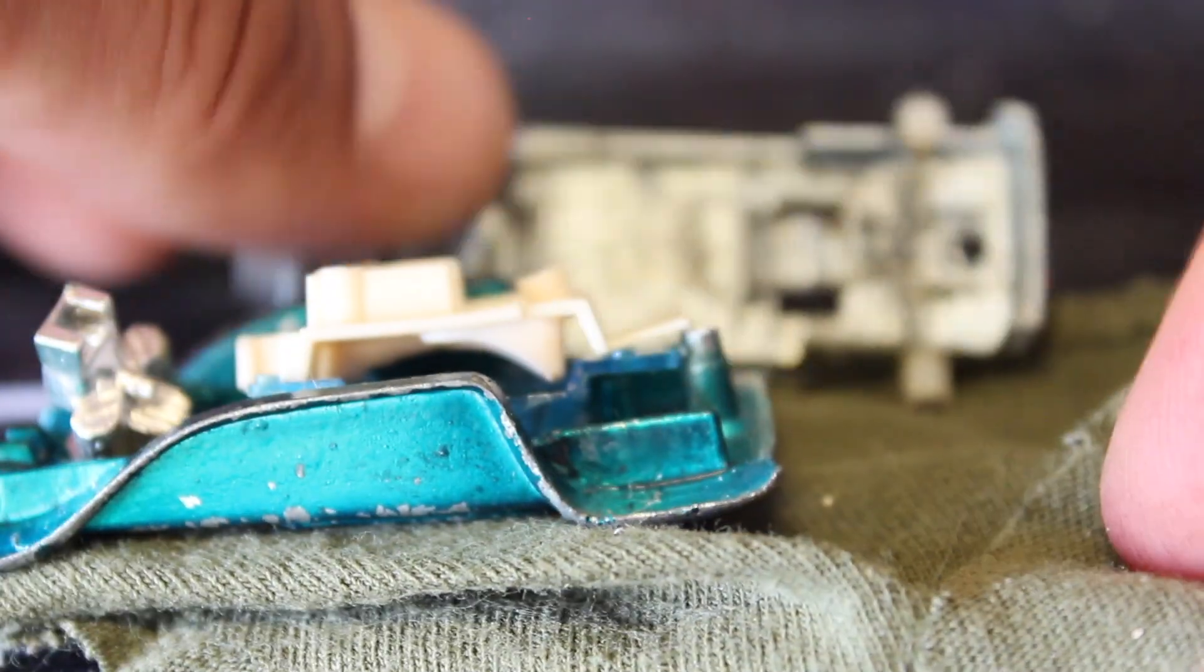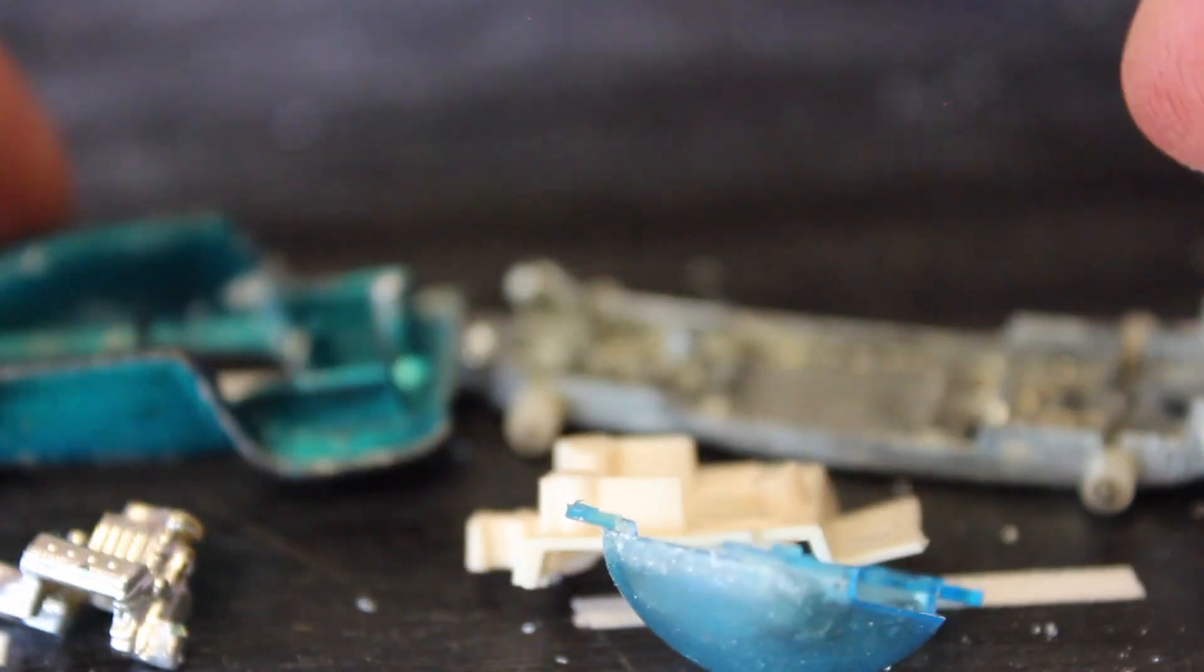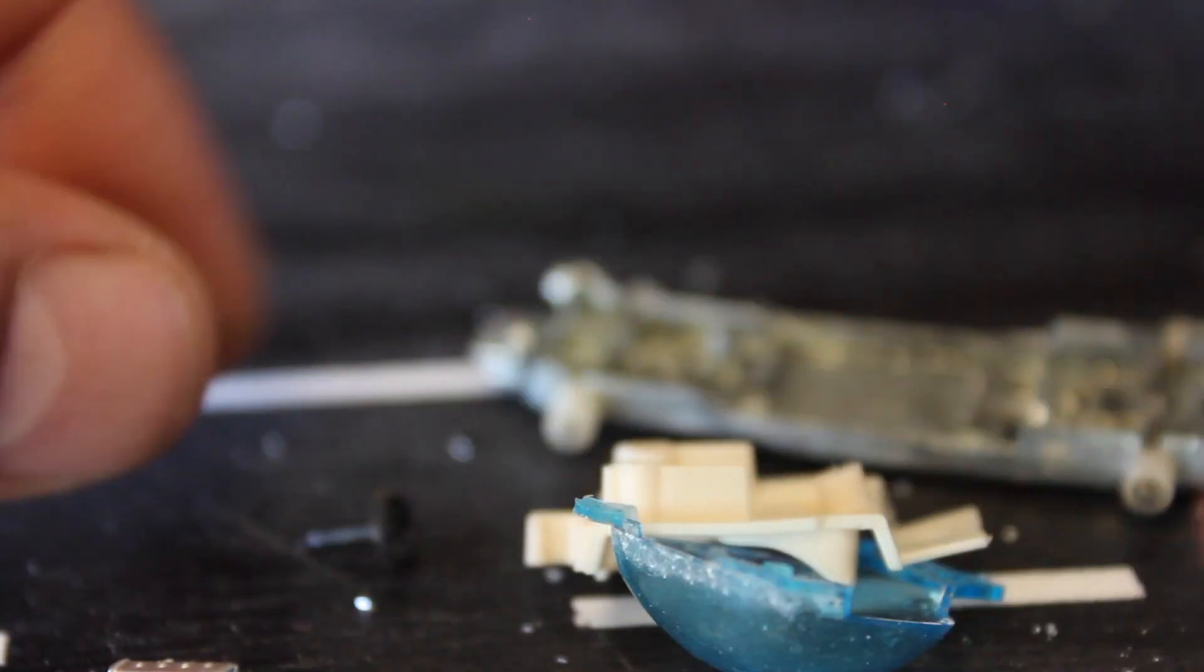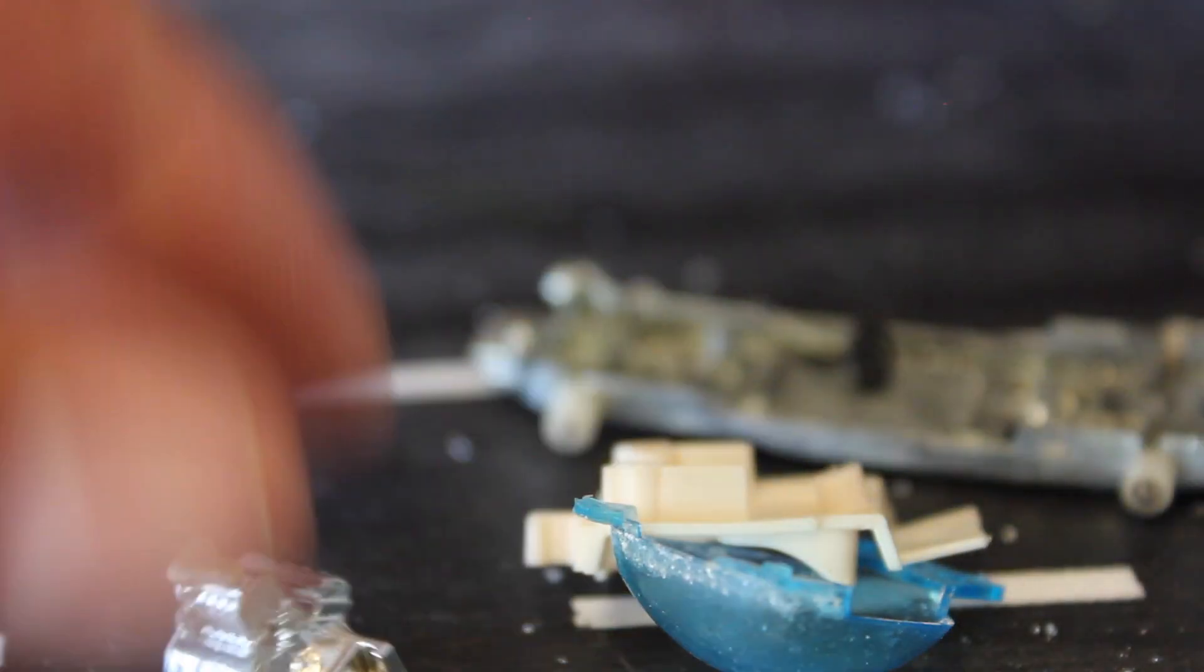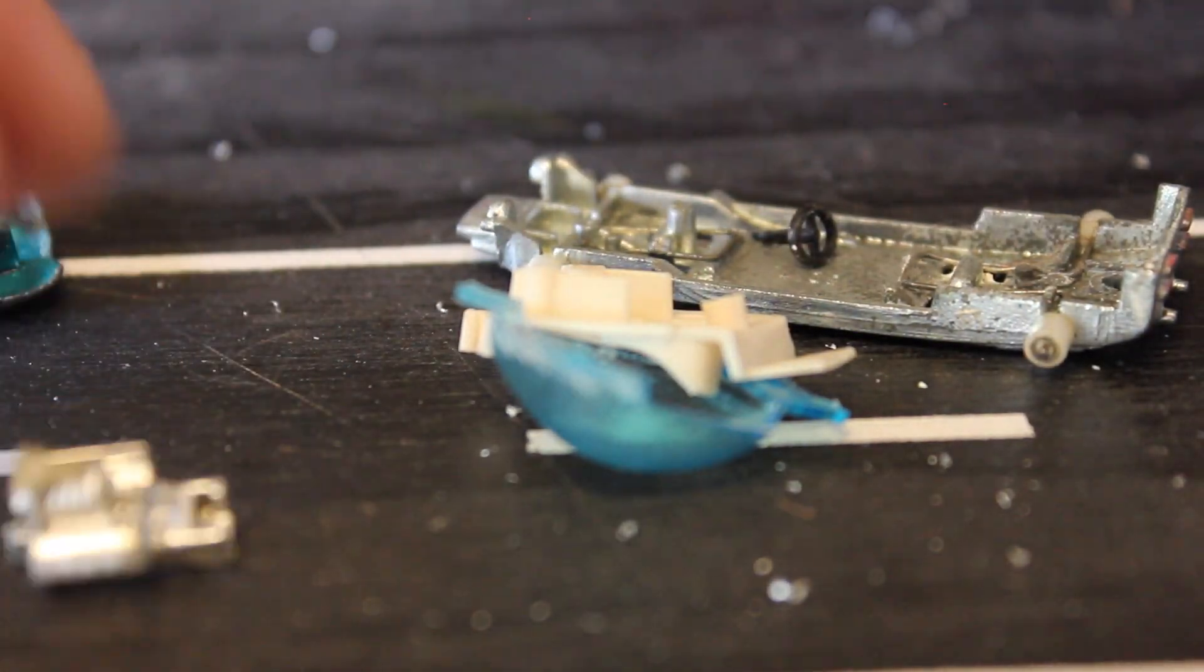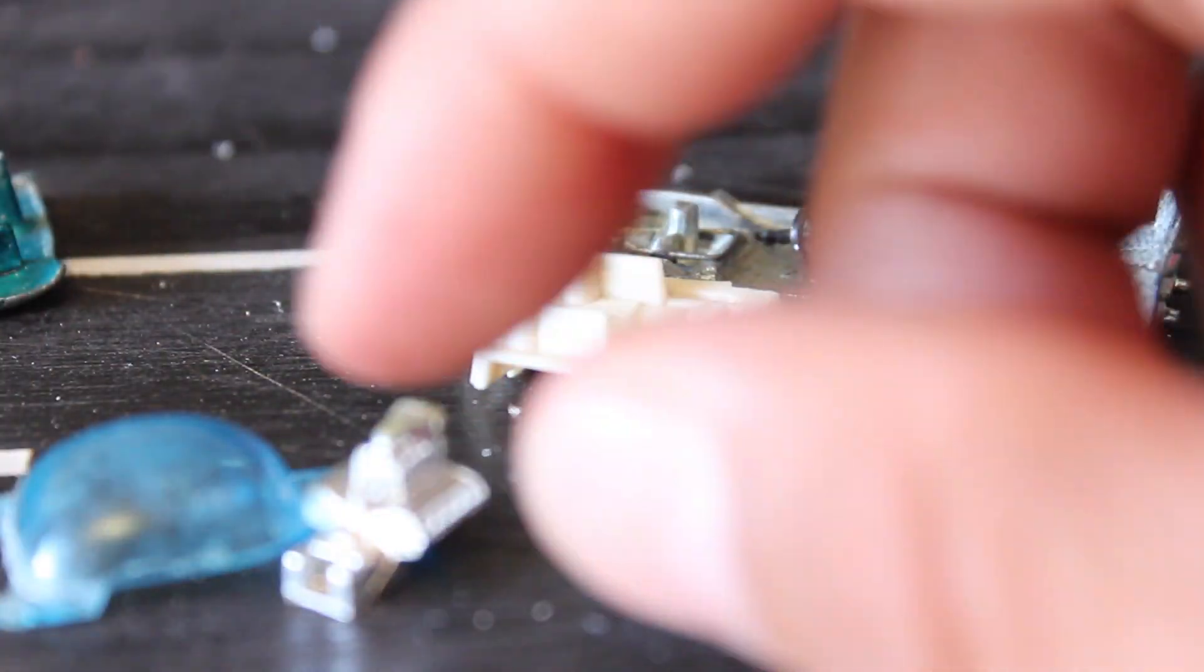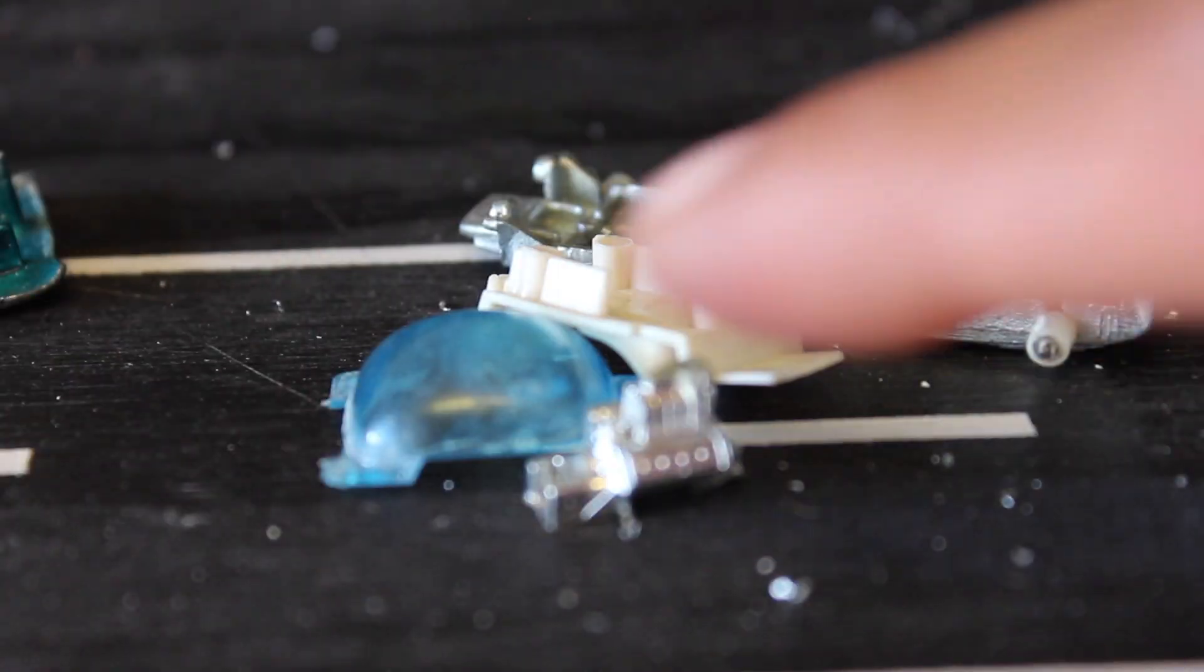And here we have a torn apart beatnik bandit. Alright, steering wheel. I'm going to take care not to lose that. Let's see if we can see all the components there. So the engine is going to need a little bit of chrome. Windshield, too bad. Just going to have to clean it up some.